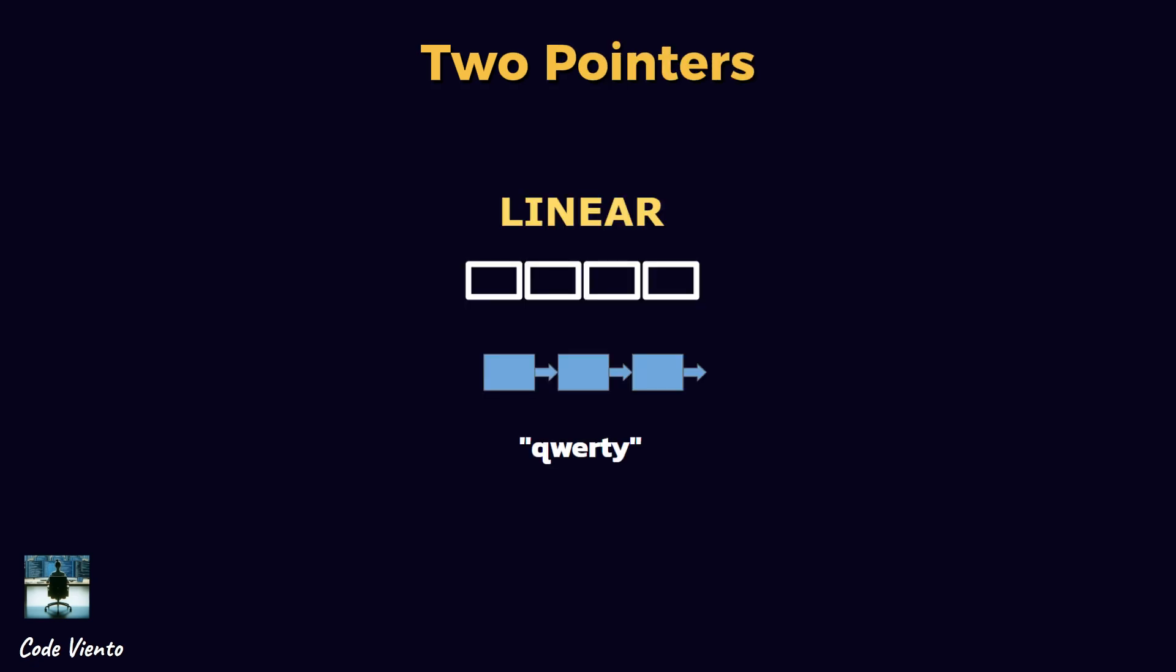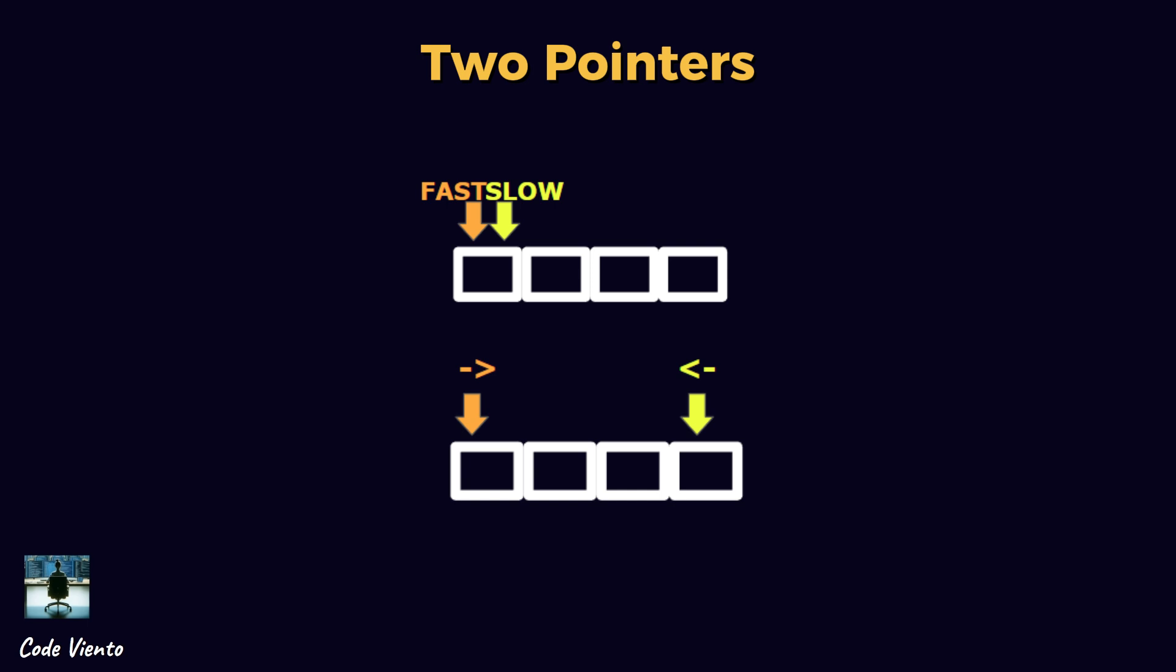Two-pointers is a versatile technique used to solve problems on linear data structures such as arrays, linked lists, or strings. The idea is to use two indices to move through the data at different speeds or from opposite ends.